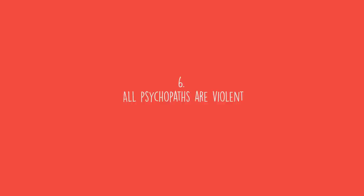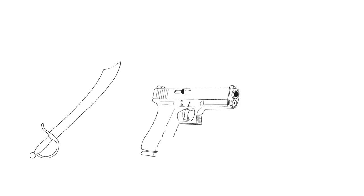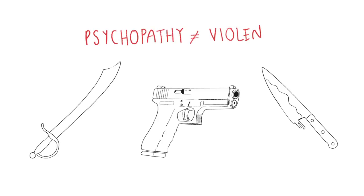Number six: All psychopaths are violent. Some psychopaths can take part in violent crimes, especially since they have a reckless nature that doesn't stop them from taking big risks. But not all psychopaths are the same, so one's intent will be different from the other.